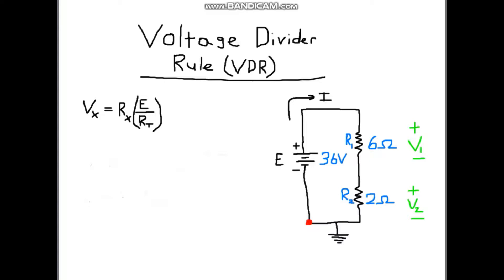And what the voltage divider rule says is that the voltage across the resistor in a series circuit is equal to the value of that resistor times the total applied voltage divided by the total resistance of the series configuration.